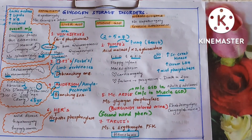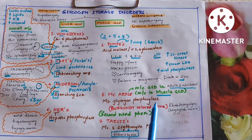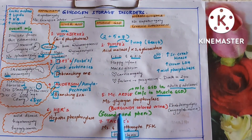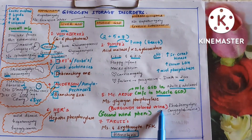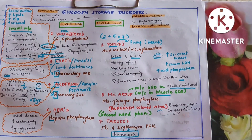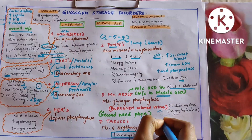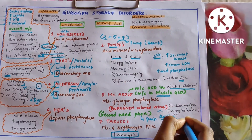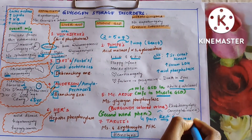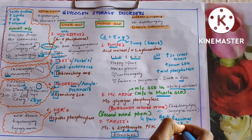McArdle's disease is due to muscle glycogen phosphorylase deficiency. There is burgundy-colored urine because of myoglobinuria, which occurs due to rhabdomyolysis. Second wind phenomenon is seen in McArdle's disease — when a person starts walking he gets pain, takes rest, and then resumes back with more energy. This is called second wind phenomenon.